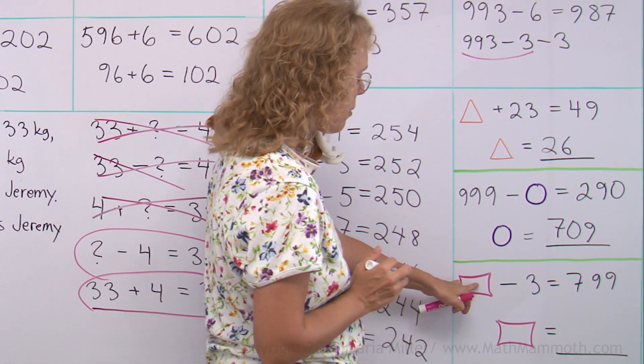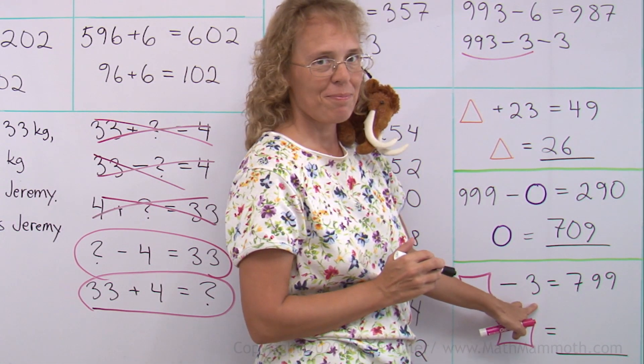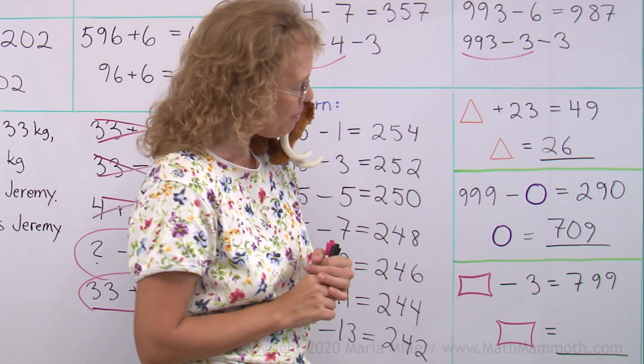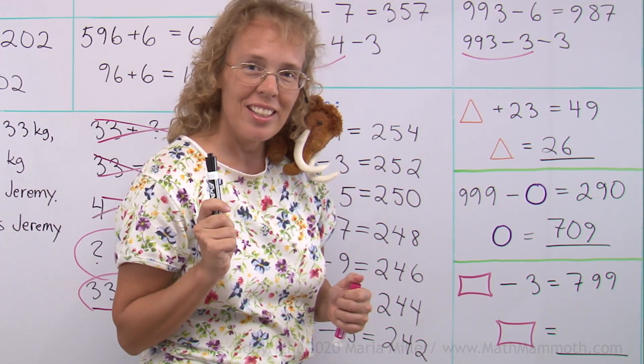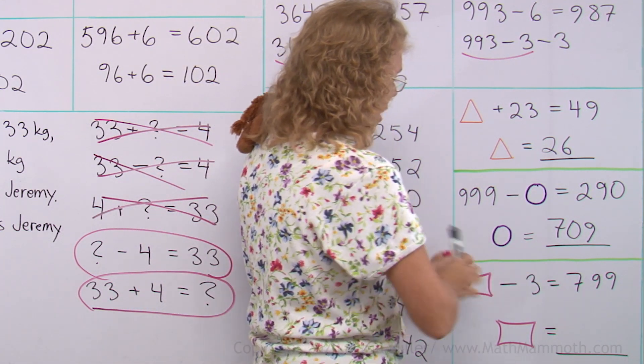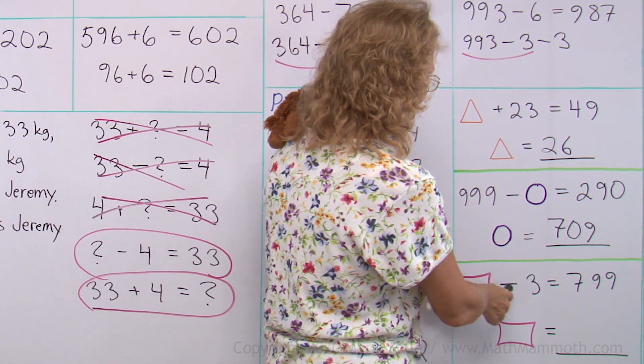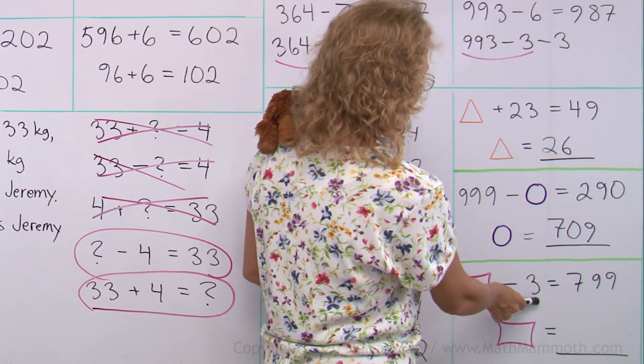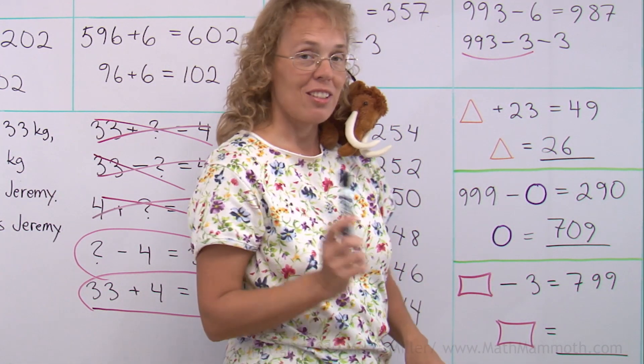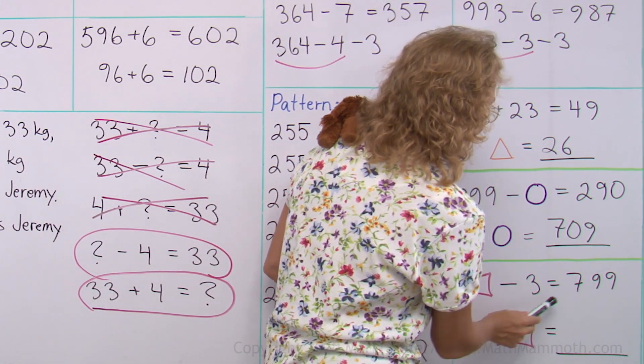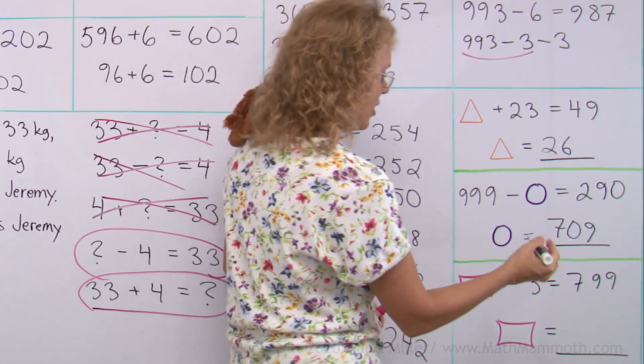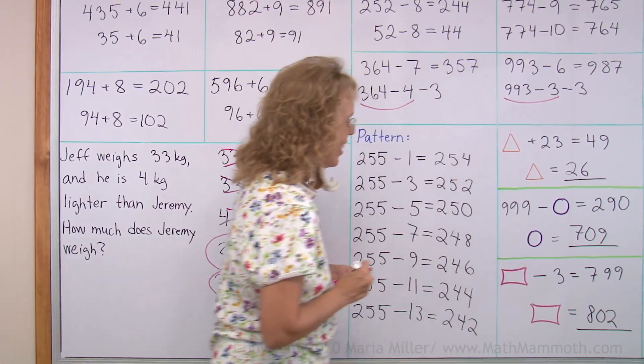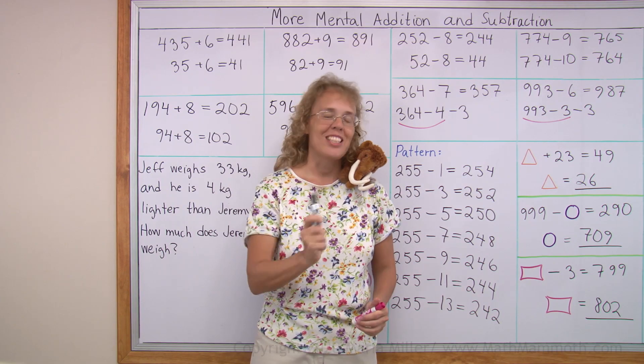Lastly, there's some number. We take away 3. And what is left is 799. Do you remember this kind? Here you have to work backwards, okay? From something you take away 3 and this is left. So take what's left and add that back in and you get how much you had originally. So you take this and add 3. So 802. Yeah. All right. Good job. We're all done with this lesson.